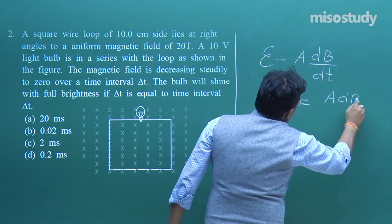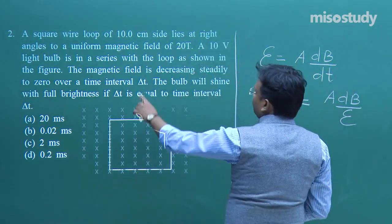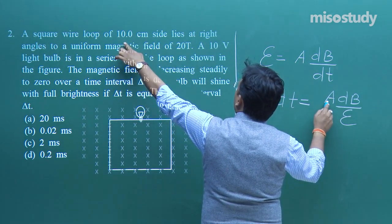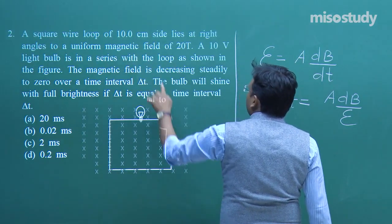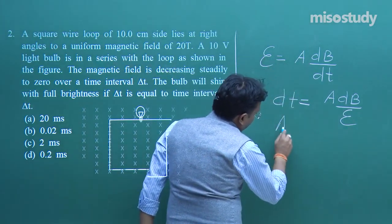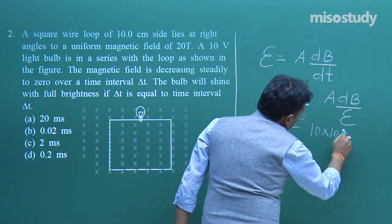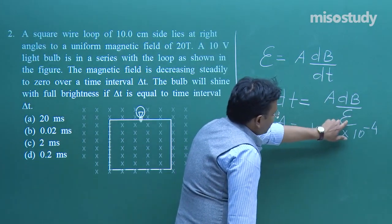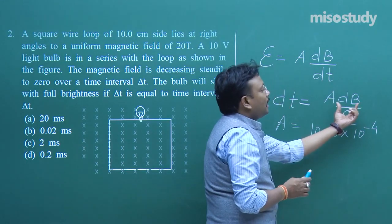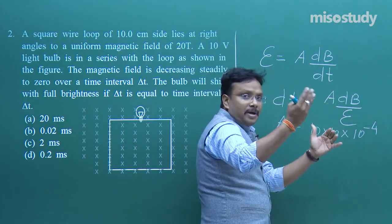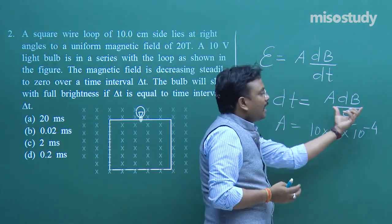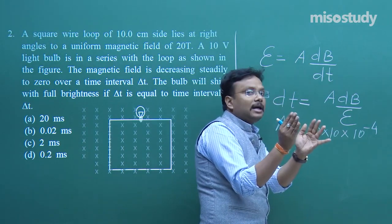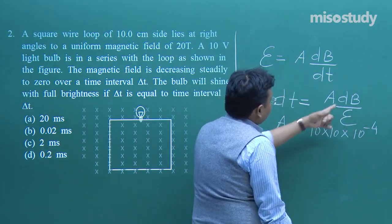Let us put in the values. A = (10 × 10⁻²) × (10 × 10⁻²) = 10 × 10 × 10⁻⁴ m² (area of square, side L, so A = L²). ΔB = 20 (from 20 T to 0). The induced EMF equals the bulb voltage = 10 V. So Δt = A · ΔB / ε.